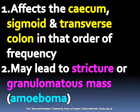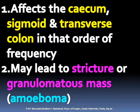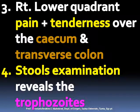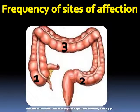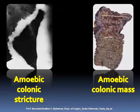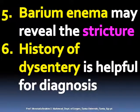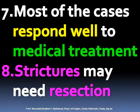Localized intestinal disease affects the sigmoid and transverse colon in that order of frequency, and may lead to stricture or granulomatous mass (amoeboma). Symptoms include right lower quadrant pain and tenderness. Stool examination reveals the trophozoite. Barium enema may reveal strictures. Most cases respond well to medical treatment, though strictures may need resection.